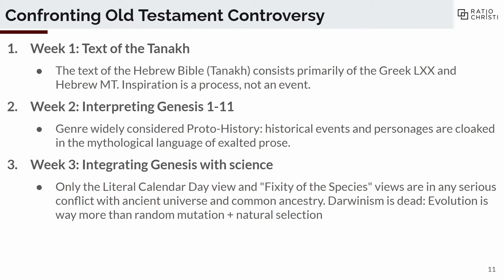There are really only two interpretations that are in any serious conflict with the scientific data regarding evolution. If you take a literal calendar day view of Genesis 1, that yields an age of the earth about 6,000 to 10,000 years old, which is in conflict with the contemporary scientific consensus of several billion years. There are ways to harmonize that — appearance of age, for example. We also talked about the 'kinds' of Genesis 1, where some interpretations are consistent with common ancestry and some are not.